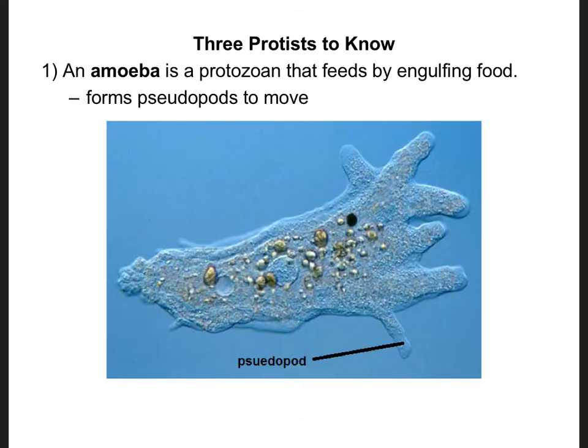There are three protists we're going to look at more closely. The first is an amoeba — it is a protozoan that feeds by engulfing food. Since it's a protozoan, that means it's animal-like and therefore a heterotroph, which is why it doesn't do photosynthesis. The way these guys move is by forming what we call a pseudopod — pseudo means false and pod means foot, so it literally means a false foot. These little extensions of cytoplasm can reach out and stick onto things, allowing the amoeba to pull itself closer and also helping get food into its system.